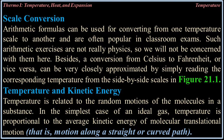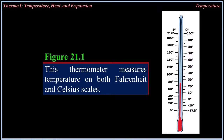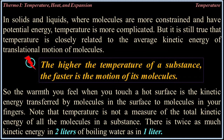Temperature and Kinetic Energy: Temperature is related to the random motions of the molecules in a substance. In the simplest case of an ideal gas, temperature is proportional to the average kinetic energy of molecular translational motion — that is, motion along a straight or curved path. In solids and liquids where molecules are more constrained and have potential energy, temperature is more complicated. But it is still true that temperature is closely related to the average kinetic energy of translational motion in molecules. The higher the temperature of a substance, the faster is the motion of its molecules.